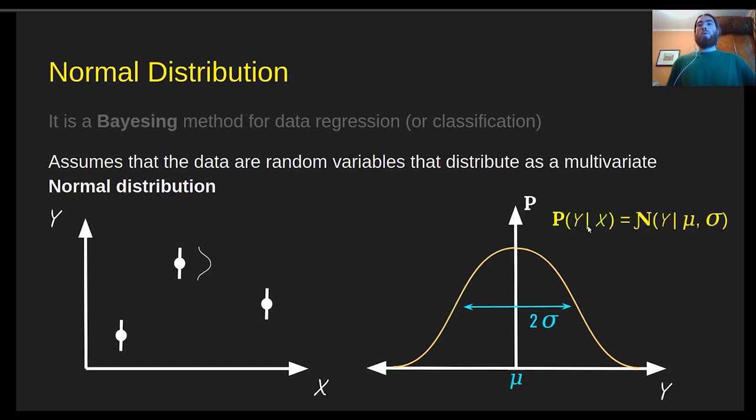Another way of looking at this is that the probability of observing y given x distributes as a normal distribution with a mean of mu and a standard deviation of sigma. And this is true for all the other data points. Or that's the assumption, at least. And jointly, they distribute as a multivariate normal distribution.